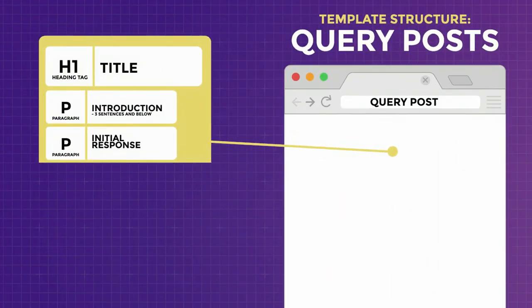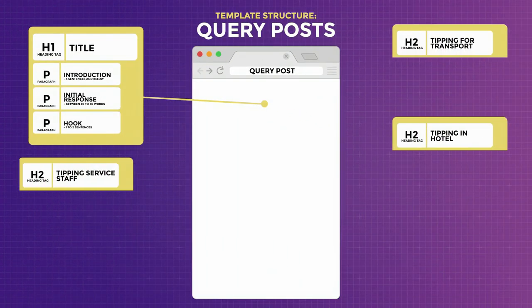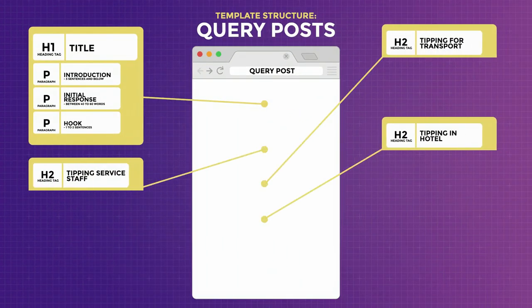Your initial response should be short and sweet and should not beat around the bush. Google tends to pick up the most concise and accurate answer and place it as the featured snippet, so it makes sense to optimize this part of the article. Write as though you are answering a question verbally in a conversation — it should be between 40 to 60 words. Following that, write a sentence or two to let your readers know there's more to this initial response and you're going to break it down. This is where you will add your subheadings.